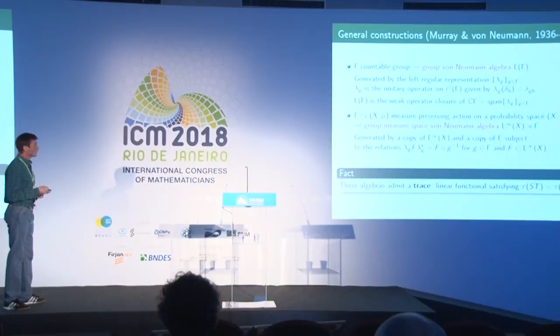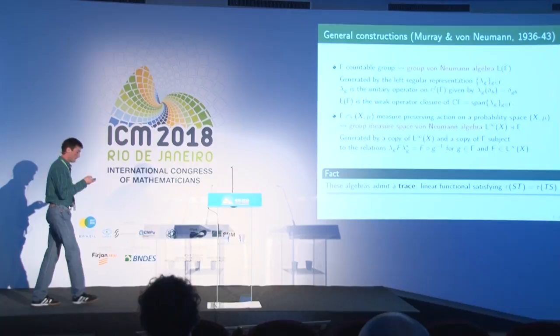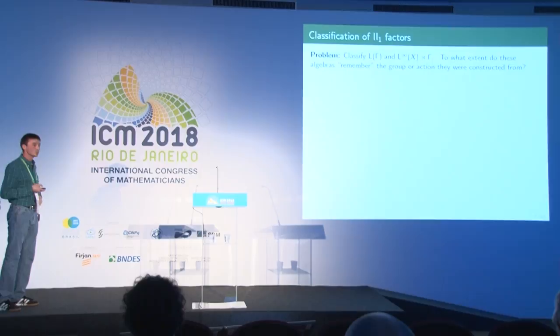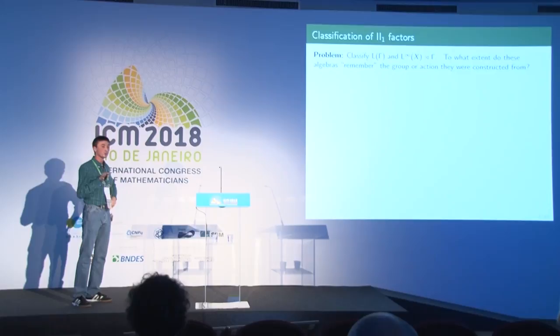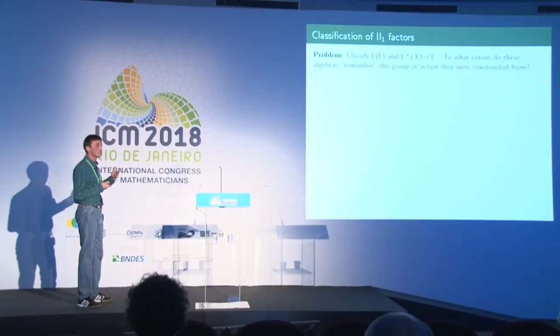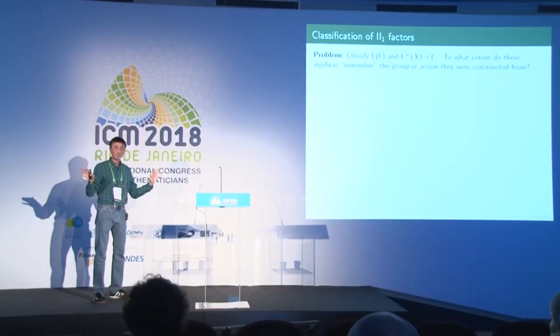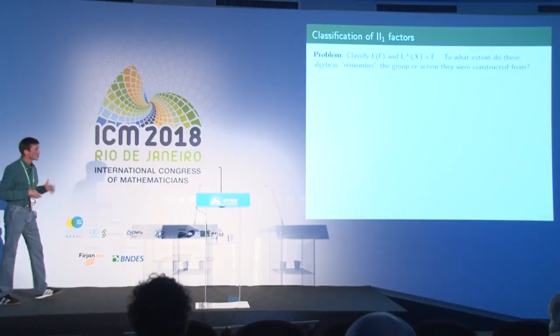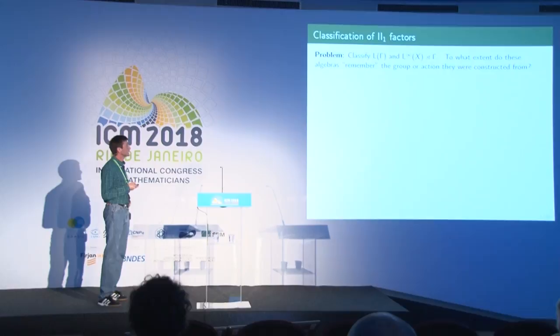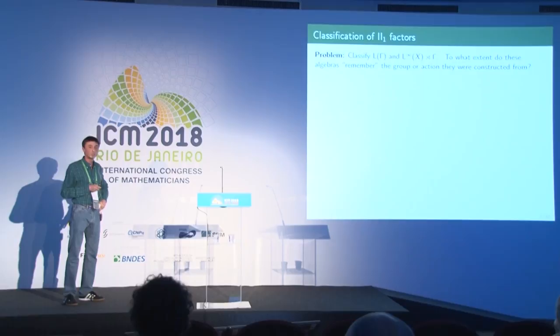These are the constructions that Murray and von Neumann introduced, and they motivate the following general question: classify L(Γ) and L∞(X) ⋊ Γ in terms of the group and action you're given. More generally, to what extent do these algebras remember the group or action they were constructed from? If two groups have isomorphic von Neumann algebras, can you say anything about the relationship between the groups? The first observation is that, in general, von Neumann algebras tend to forget most of the information about the group or the action.